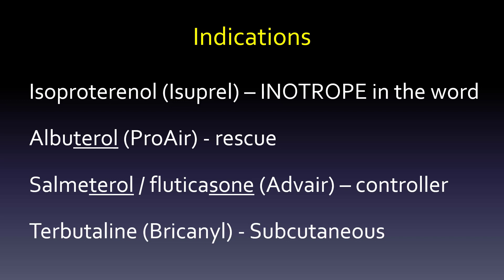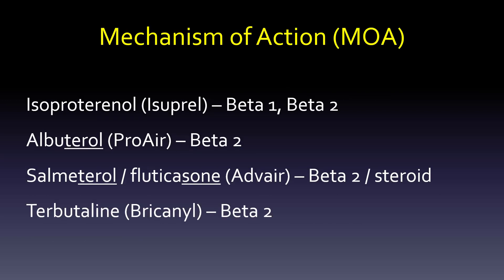How do we remember all this? The mechanism of action can be really helpful if you know what to look for. Isoproterenol, or Isuprel, is a beta-1 and beta-2 agonist, so it's going to affect the heart and the lungs. You've heard the mnemonic: you have two lungs, so beta-2; one heart, so beta-1. Albuterol — that's Pro-Air — is just going to be beta-2, and we'll talk about how that isn't always the case when used properly.